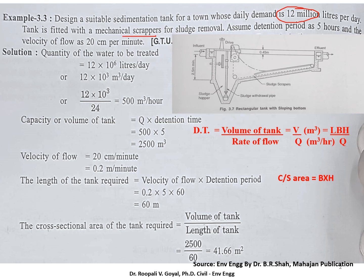The tank is fitted with mechanical scrapper. So this is the mechanical scrapper arrangement. Assume the retention period of 5 hours. That is 5 hours of detention time, and the horizontal velocity of flow is 20 centimeter per minute. That we can assume between 15 to 30.